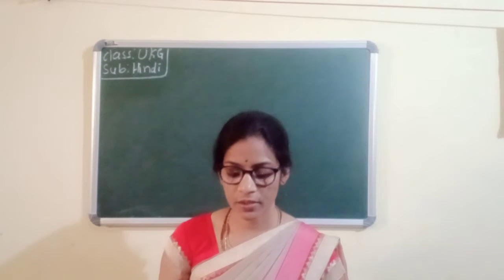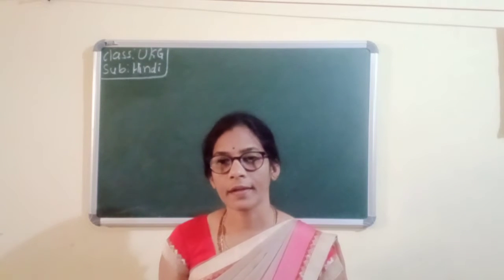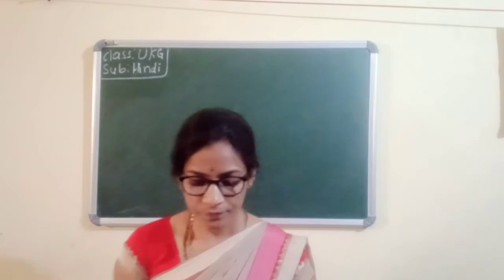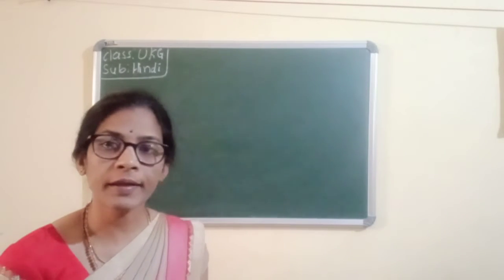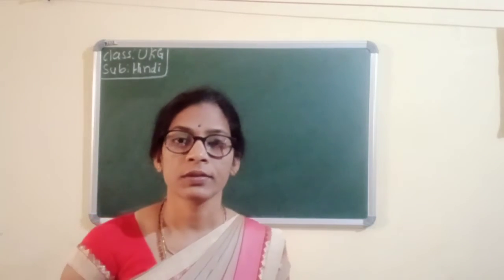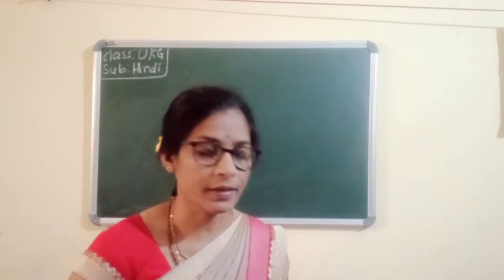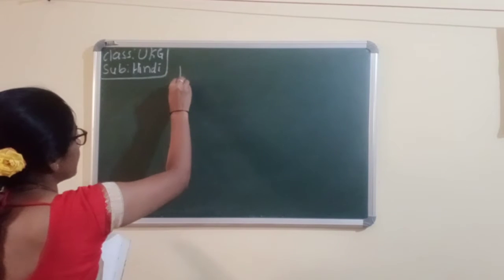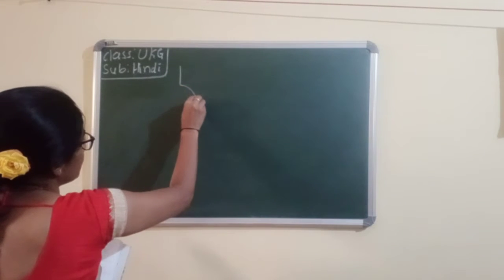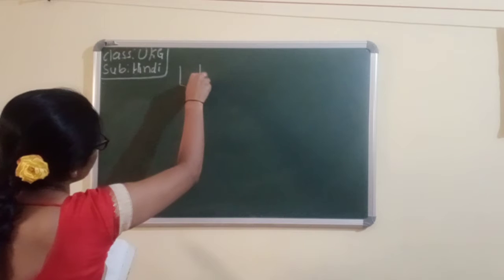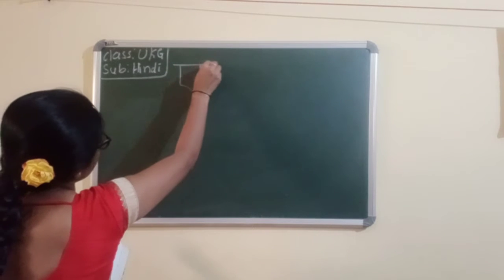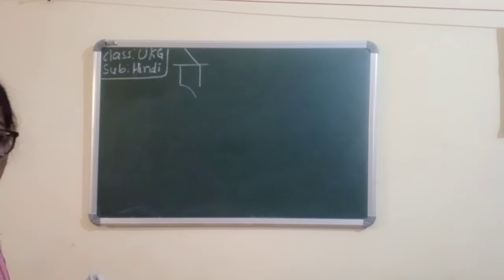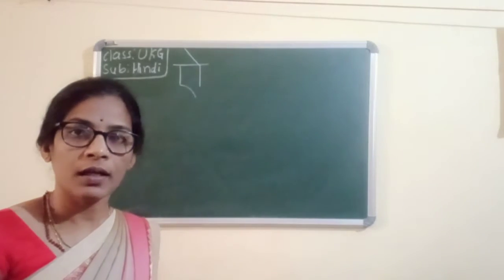Today I am going to learn about the next letter — I. How to write I and how to read it. Look at it. First, a straight line, then a slanting line, then a straight line, then a sleeping line, and after you write the slanting line. This is called I.